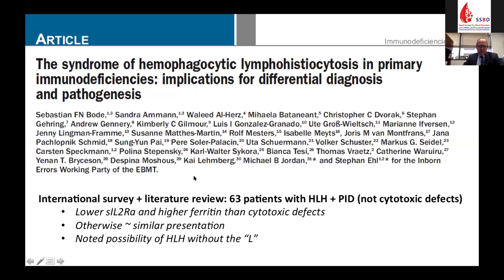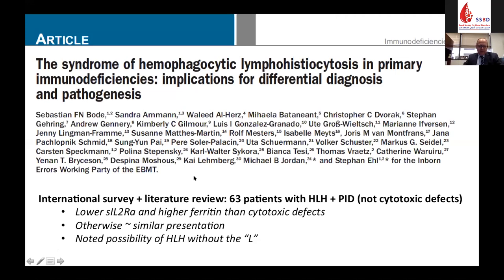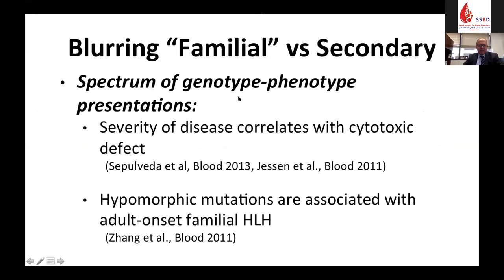A European group did a large retrospective review and found a high number of patients with both HLH and associated primary immune deficiency — not cytotoxic defects. This challenges the paradigm. We're also seeing more blurring of familial versus secondary HLH based on genotype-phenotype presentations. A complete absence of perforin will present in the first several weeks of life, while Griscelli syndrome might present as smoldering disease over time.